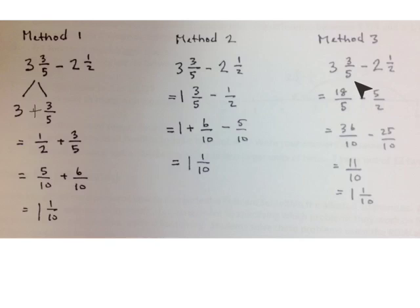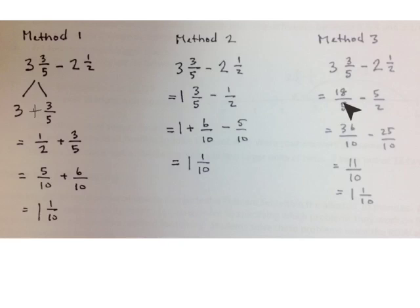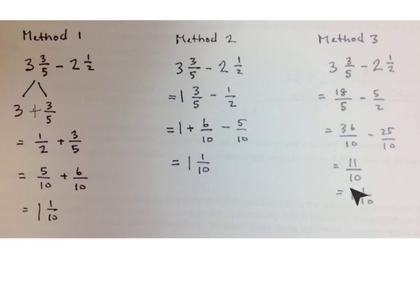In the last method, we change both mixed numbers to improper fractions. 3 and 3 fifths: 3 times 5 is 15 fifths, plus 3 more fifths is 18 fifths. 2 and 1 half: 2 times 2 is 4 halves, plus 1 more half is 5 halves. 18 fifths minus 5 halves — our common unit is 10. Multiply 18 fifths by 2 over 2 to get 36 tenths; multiply 5 halves by 5 over 5 to get 25 tenths. 36 take away 25 is 11 tenths, which is 1 and 1 tenth.